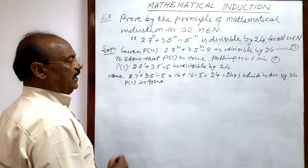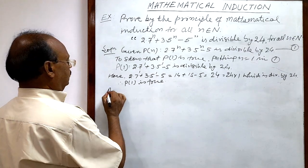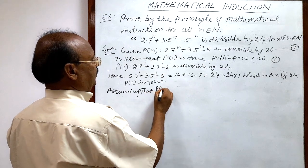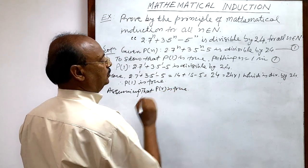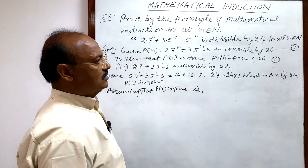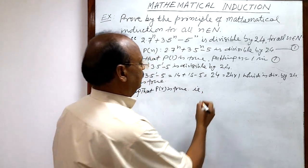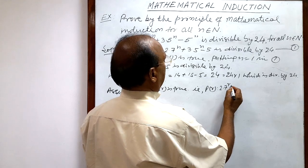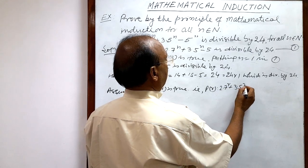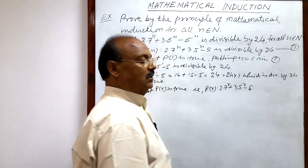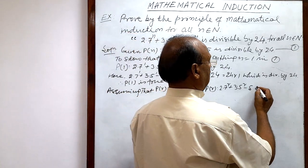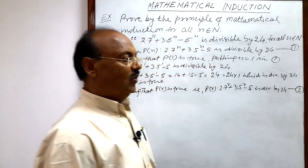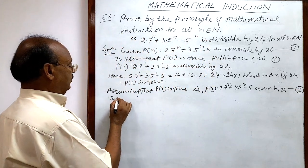Second step: we assume that P(r) is true. Assuming P(r) is true means when we put n = r, we get P(r): 2·7ʳ + 3·5ʳ - 5 is divisible by 24. Let us call this relation number 2.